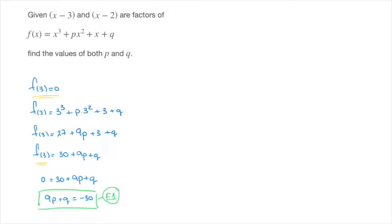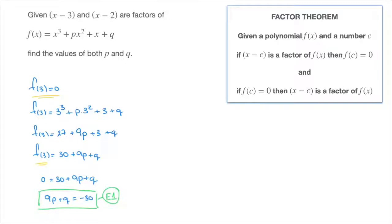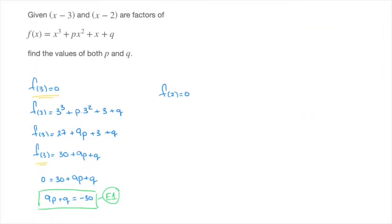Since x minus 2 is a factor, the factor theorem allows us to write that f of 2 must equal 0. And if we replace every x inside the expression for f of x by 2, we obtain: f of 2 equals 2 raised to the power of 3, plus p times 2 squared, plus 2, plus q.